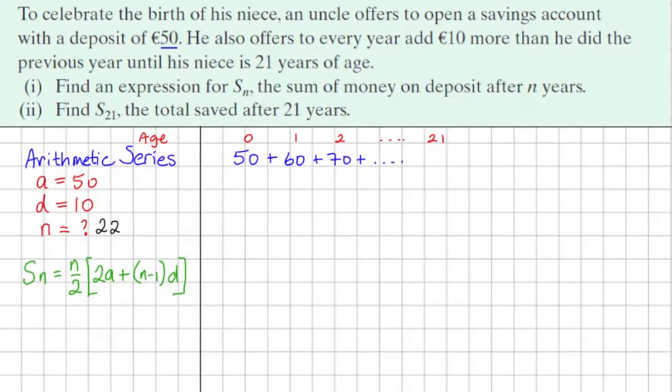So we're going to use this formula, subbing in. We're just having in terms of N, so we're just going to sub in that A is 50 and D is 10 into this formula. So it's N over 2, 2 times A which is 2 times 50 plus N minus 1 times D which is 10.